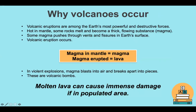Moving on — why volcanoes occur. This is just a summary of what's in your book. Volcanic eruptions are among the Earth's most powerful and destructive forces. When it's hot in the mantle, some rocks melt and become a thick flowing substance we know as magma. This heat and pressure builds up in the mantle — the layer beneath the crust — and some of the magma then pushes through the vents and fissures in the Earth's surface, and that's when a volcanic eruption occurs. Heat always expands and causes pressure on other layers, and the moment this escapes, it's a volcanic eruption.